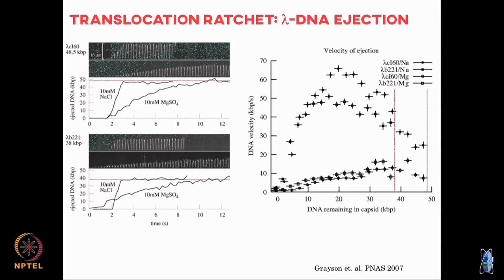So if you measure speeds under different conditions, these are for example experiments on two different viruses, lambda C160 and lambda B221. This has DNA of different lengths, this is 48.5 kilobases, this is 38 kilobases, and what you are seeing is the ejected DNA as a function of time. So these are time traces of the fluorescent DNA as a function of time under two different salt conditions. One is a monovalent salt NaCl, another is a divalent salt magnesium sulfate. Again, because this DNA is charged, depending on the amount of salt that you put, you can control the speed with which this DNA is ejected.